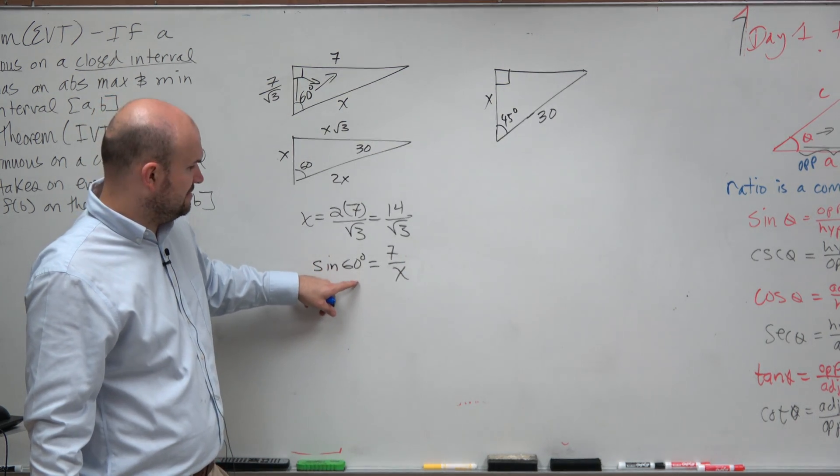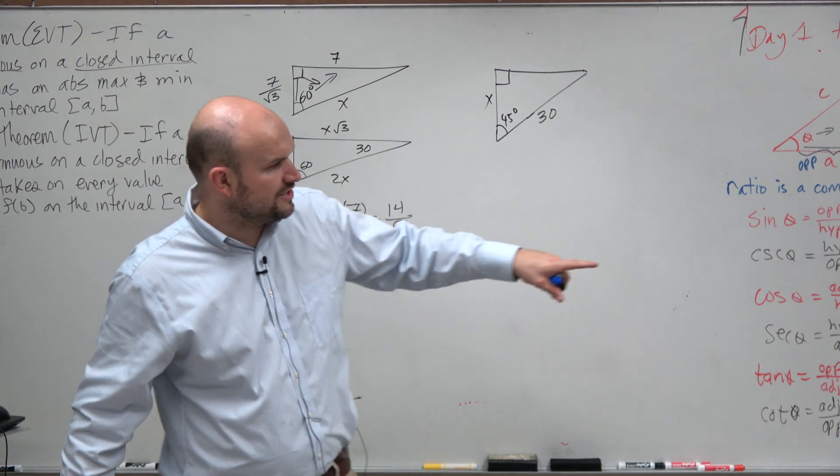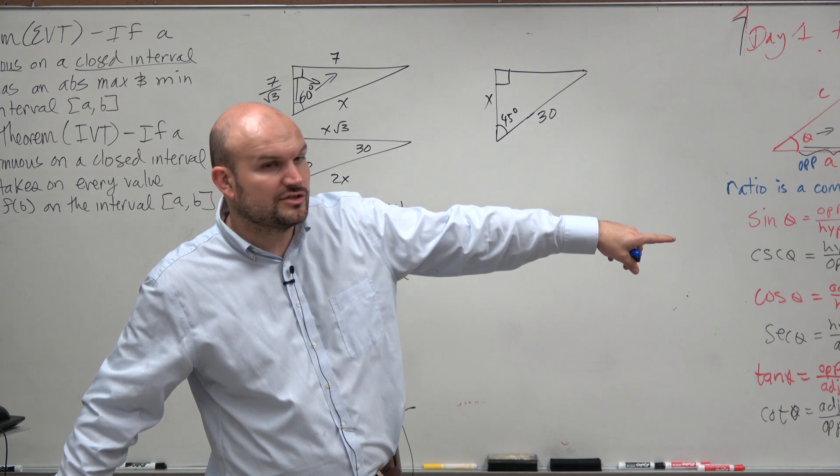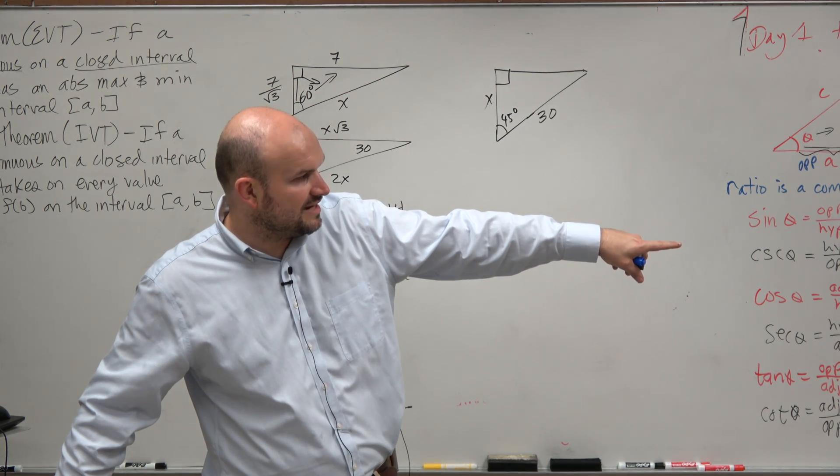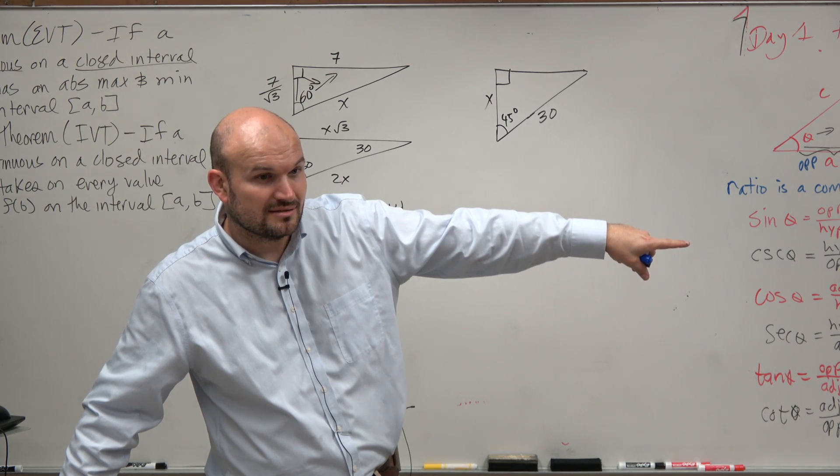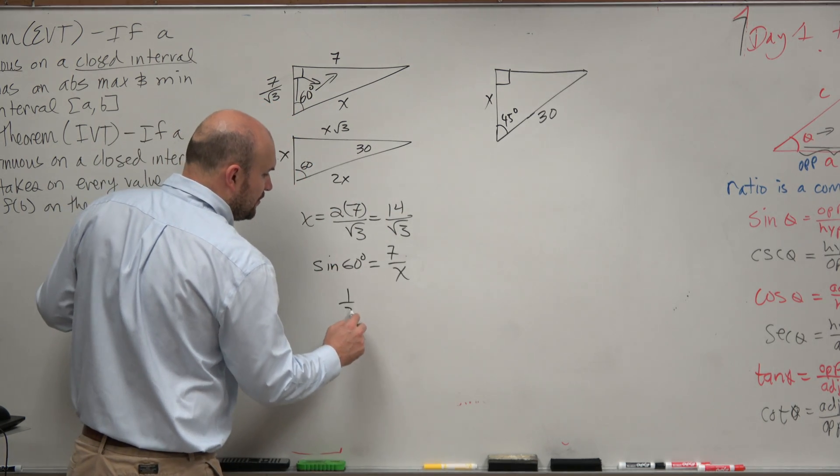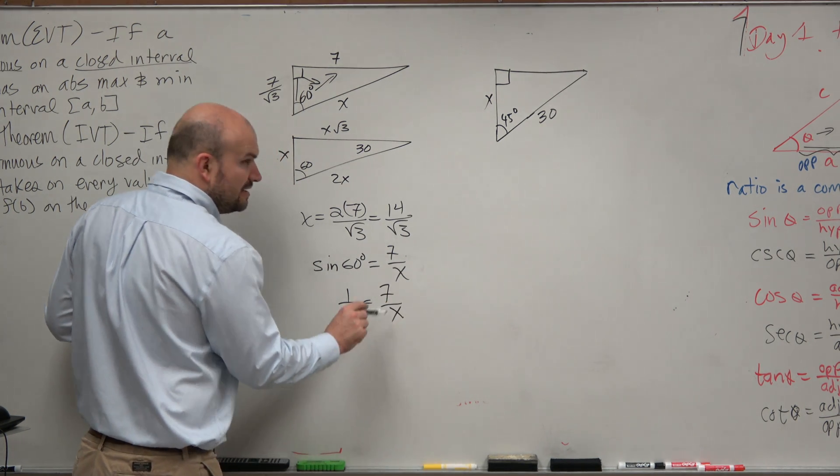So can we figure out what is the sine of 60 degrees? Look back over that unit triangle that we created. What is the sine of 60 degrees? 1 half.